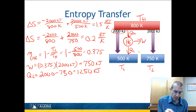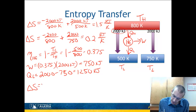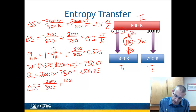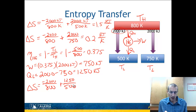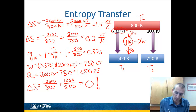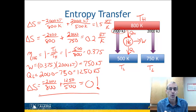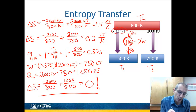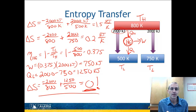Now let's look at the entropy generated with the reversible heat engine inserted. ΔS equals −2000/800 plus 1250/500. Doing this arithmetic, that equals exactly zero. And in fact, that's always going to happen — it's not a coincidence. Because I've got a reversible heat engine, I'm generating no entropy, and that's confirmed when we calculate it.